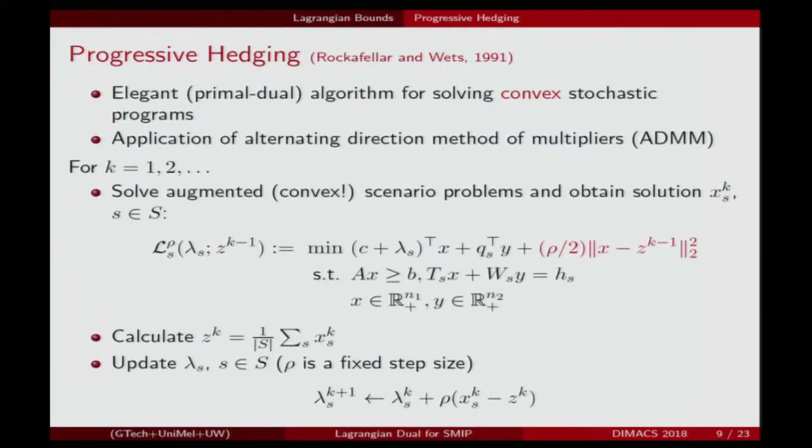Our focus is trying to find this Lagrangian dual bound, and then maybe combine it with good heuristics for primal solutions to understand how good those solutions are. I don't have to spend much time reviewing progressive hedging with this audience, but just to explain how it fits in. It's typically for convex stochastic programs, and as we know, it's an application of ADMM.